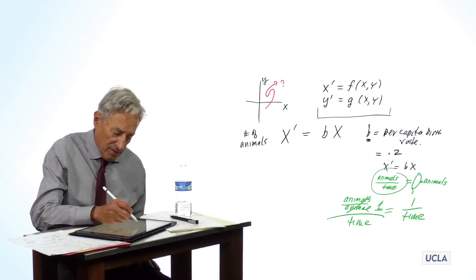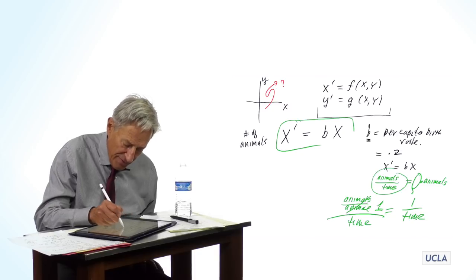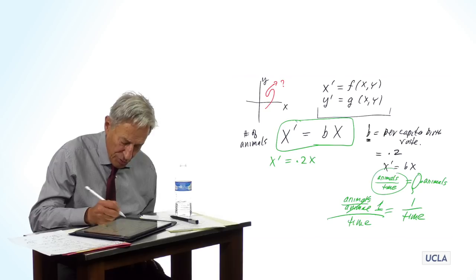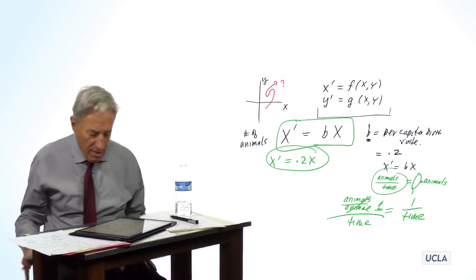So let's deal with this very simple model, x prime equals 0.2x. And how do we understand this? How do we deal with it?